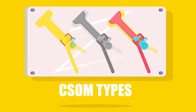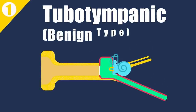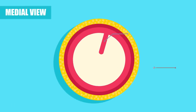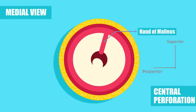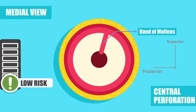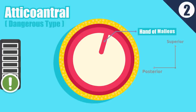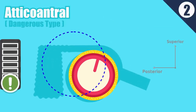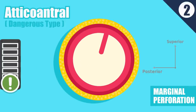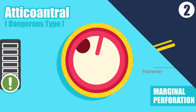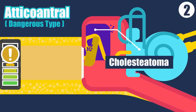Types of CSOM: clinically divided into two types. 1. Tubotympanic — also called the safe or benign type. It involves the antero-inferior part of the middle ear cleft and is associated with a central perforation. There is little risk of serious complications. 2. Atticoantral — also called the unsafe or dangerous type. It involves the postero-superior part of the cleft — the attic, antrum, and mastoid — and is associated with an attic or marginal perforation. The disease is often associated with a bone-eroding process such as cholesteatoma. Risk of complications is high in this type.